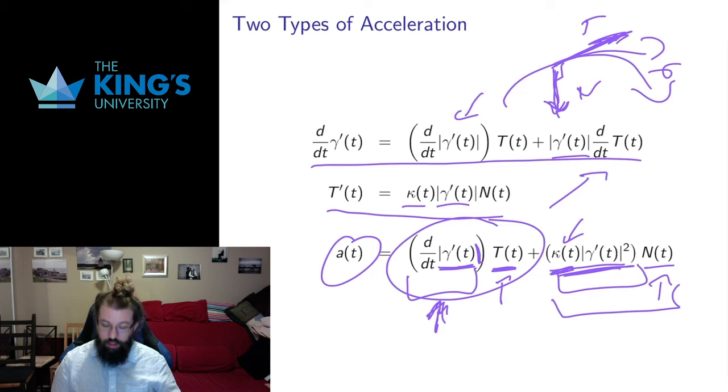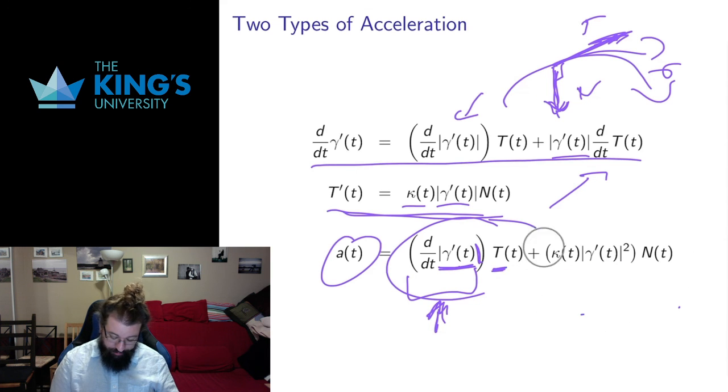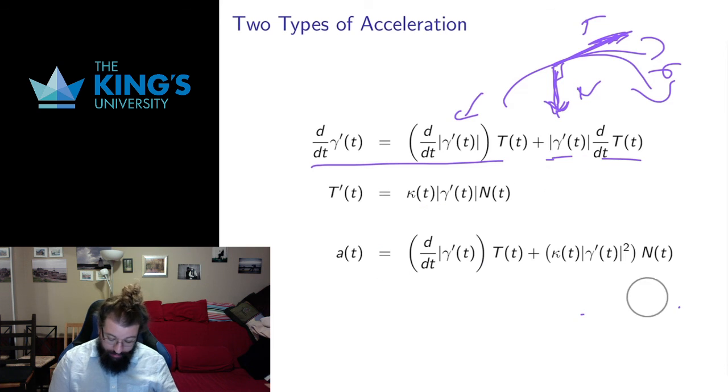So this term has to be the angular acceleration. Notice I didn't get this by imposing the notion of linear and angular acceleration. I didn't say acceleration has to have these two pieces. I said, let's see what acceleration is and use the things we've defined. What I get is that acceleration is something in the straight direction, the linear direction, and something in the perpendicular direction, the curvature direction. Acceleration naturally, just because of the calculus of parametric curves, has a linear term and an angular term.